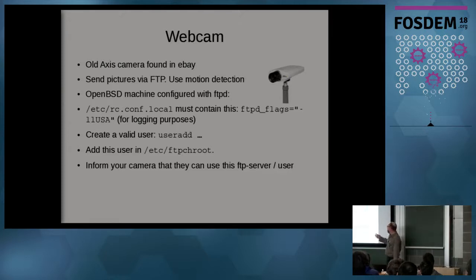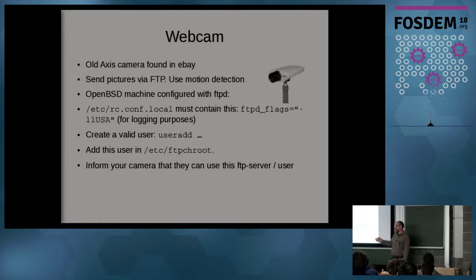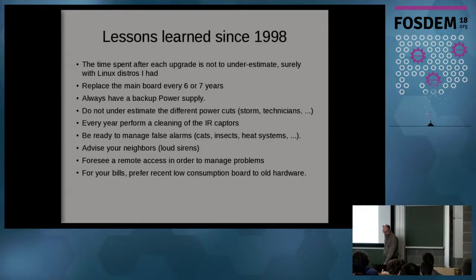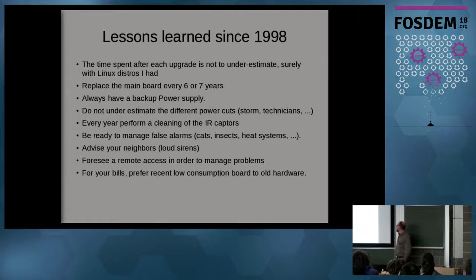For the cameras, it's a normal situation — you just configure them to send pictures to your FTP server, providing the IP address and the user ID the camera can use to put files on your OpenBSD machine. A couple of commands and you're done. You can have multiple cameras — I have two, but you can have as many as you want. My lessons learned since 1988: the time spent before each upgrade should not be underestimated — it's one of the biggest pains in this system.